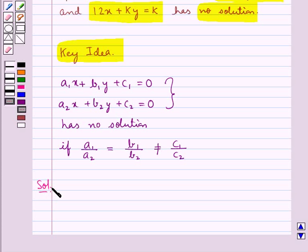Consider the given pair of linear equations which is kx plus 3y equal to k minus 2. Let this be equation 1 and 12x plus ky is equal to k. Let this be equation 2.